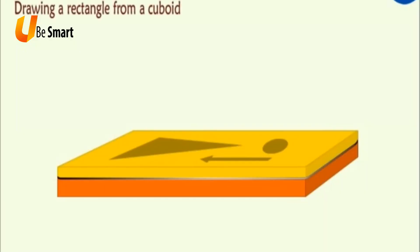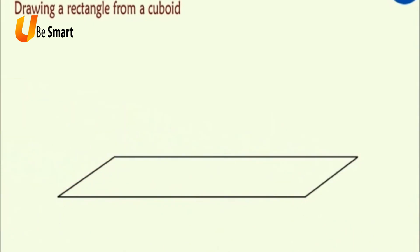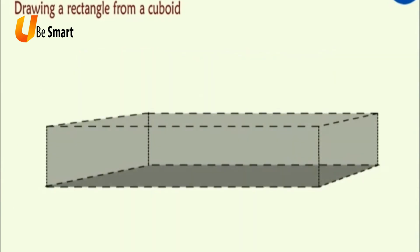Drawing a rectangle from a cuboid. Take a cuboid shaped pencil box. Take a pencil and run the pencil along the edges of the pencil box on a paper sheet. We get a rectangle. A rectangle has four sides. In a rectangle, the opposite sides are equal. Since rectangle is the basic 3D object of cuboid, the opposite sides of the faces of a cuboid are also equal.